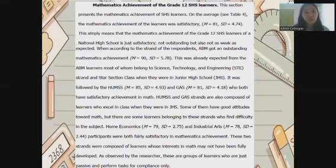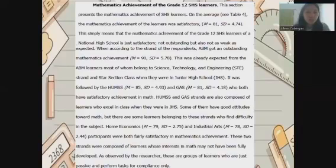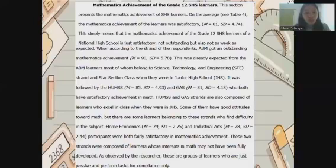ABM had a mean of 90 and standard deviation of 5.78, which was expected since most ABM learners belonged to the Science, Technology, and Engineering strand's star section in junior high school. This was followed by HUMSS with a mean of 85 and standard deviation of 4.93, and GAS with a mean of 81 and standard deviation of 4.81, both with satisfactory achievement. GAS strand learners also excel in class, though some find difficulty in the subject.